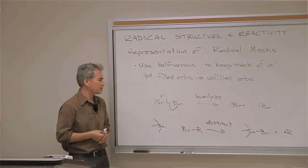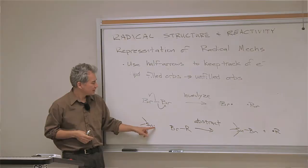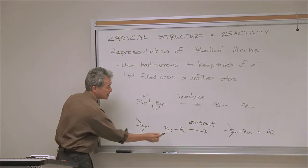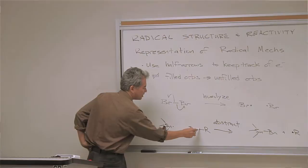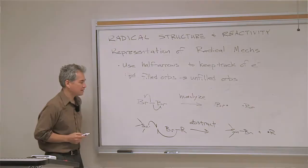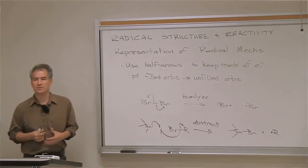Another common process is when you abstract an atom — you pull an atom off from some other bond. Here's the tin radical; in this particular reaction, tin is going to abstract a bromine atom. The way I represent that is to show there are two electrons in this bromine–carbon bond, and that bond is going to break. We use half arrows to show what happens to those two electrons: one comes over and interacts with the radical on tin, and the other goes back to the alkyl group.